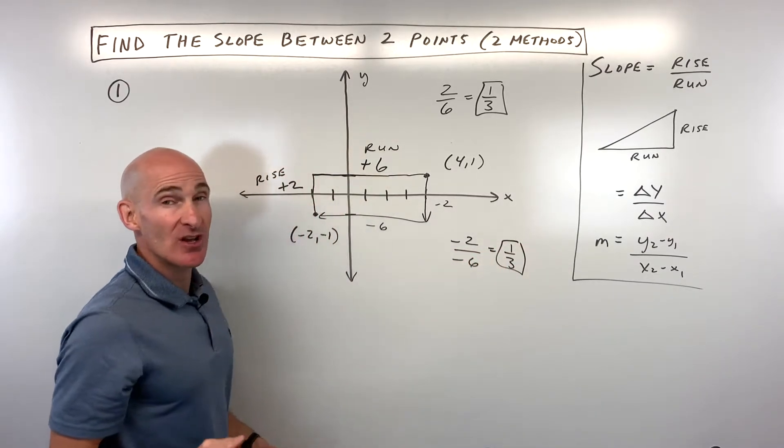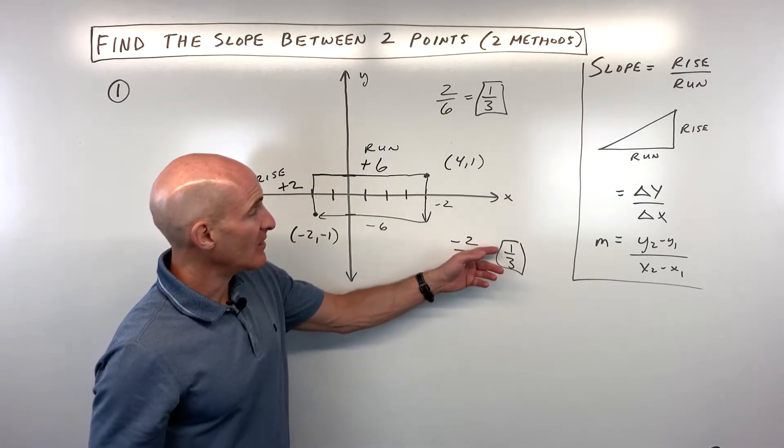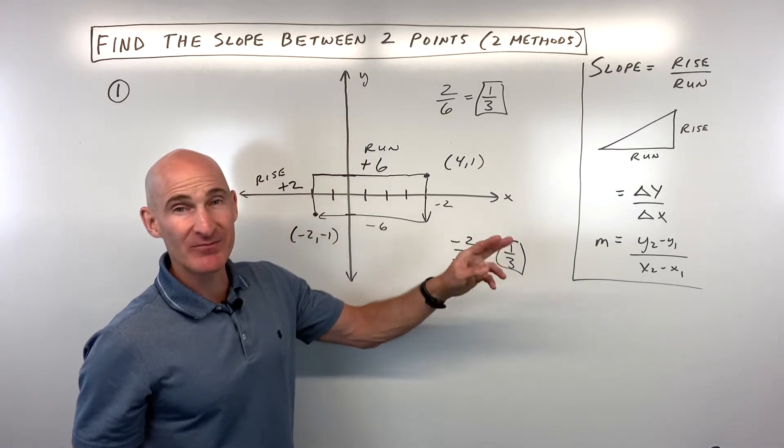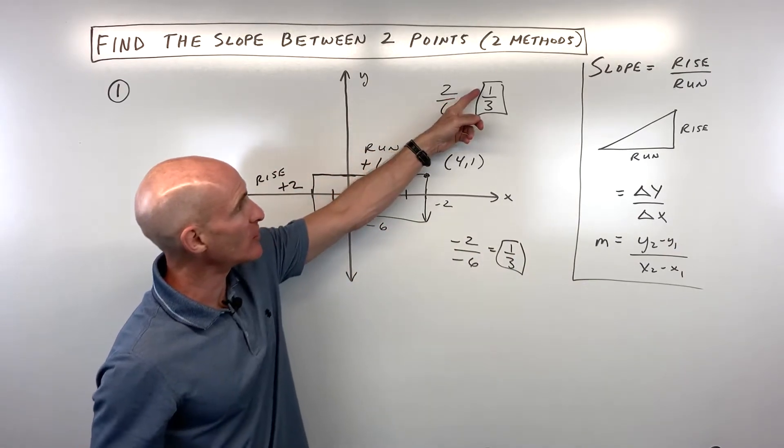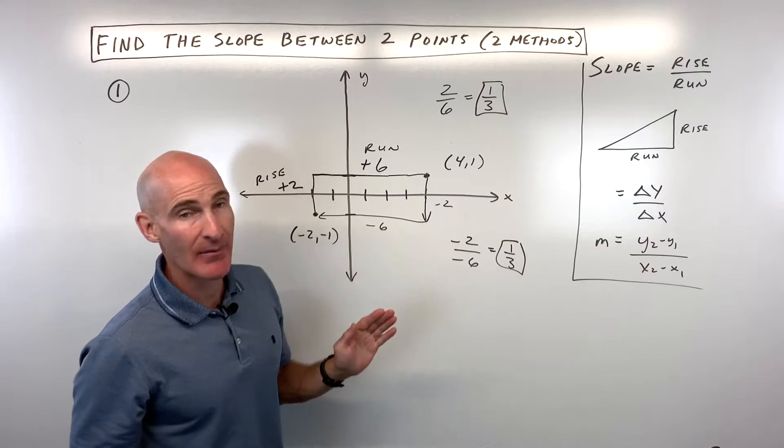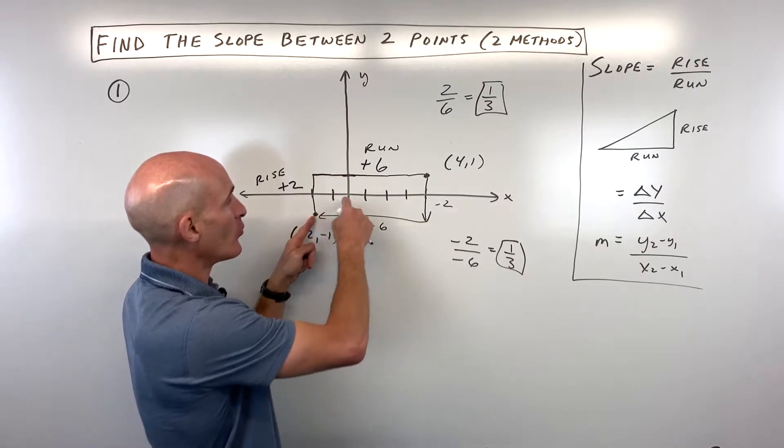Now the mistake that students sometimes make is they'll put that rise and the run in the opposite spots. The rise is up and down, that goes in the numerator. The run, left and right, that goes in the denominator.